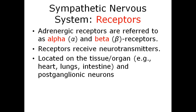Sympathetic nervous system receptors: adrenergic receptors are referred to as alpha and beta receptors. These receptors receive the neurotransmitters and are located on the target tissue or organ and on postganglionic neurons.